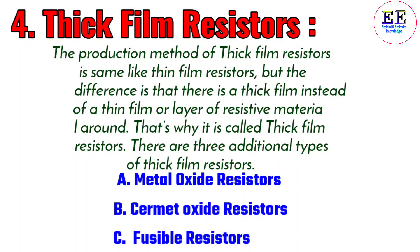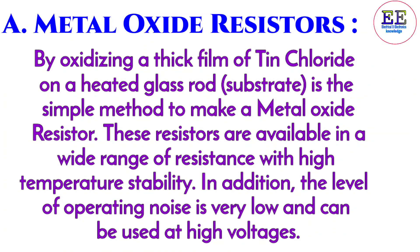There are three additional types of thick film resistors: A, metal oxide resistors; B, cermet oxide resistors; C, fusible resistors. Metal oxide resistors are made by oxidizing a thick film of tin chloride on a heated glass rod. These resistors are available in a wide range with high temperature stability, a very low level of operating noise, and can be used at high voltages.